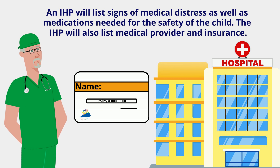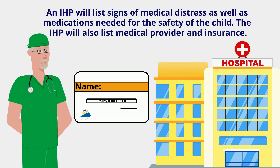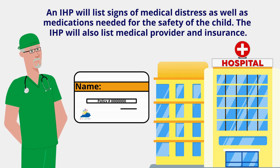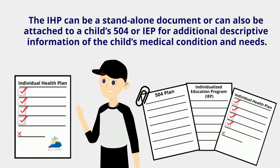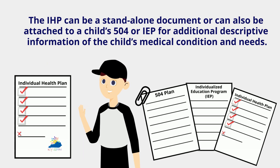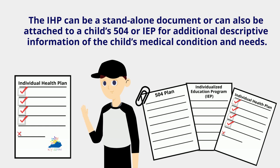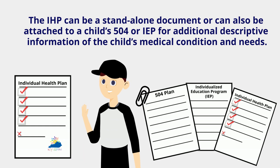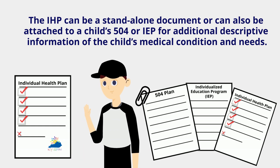The IHP will also list the medical provider and insurance. The IHP can be a standalone document or can also be attached to a child's 504 or IEP for additional descriptive information of the child's medical condition and needs.